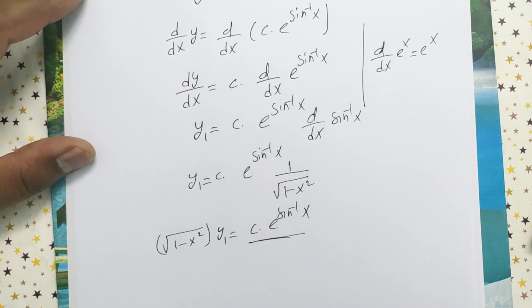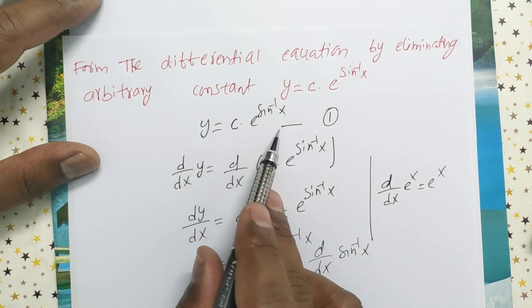From equation 1, what is the value of this one? From equation 1, the value of c times e to the power sine inverse x is y.